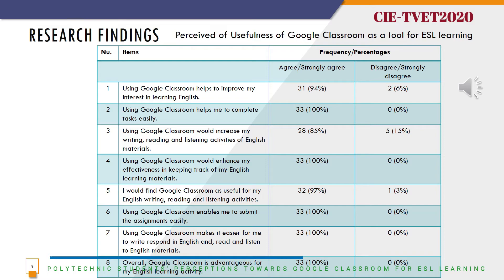To answer research question 2, the perceived usefulness of Google Classroom as a tool for ESL learning. The majority of the students agree to the statements. 100% of students agree that using Google Classroom helped them to complete tasks easily. Another 100% agree that using Google Classroom enables them to submit assignments easily. Another 100% agree that using Google Classroom makes it easier for them to write responses in English, read, and listen to English materials. Overall, 100% of the students agree that Google Classroom is advantageous for them to learn English and for their English learning activity.